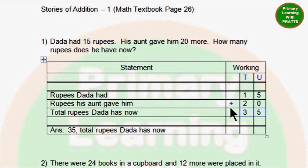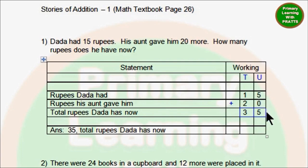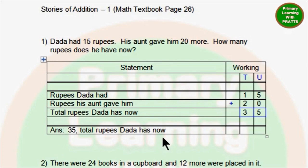Rupees his aunt gave him — 20. Because these are addition, we will put our plus sign here. Next statement: Total rupees Dada has now. We will add: 5 plus 0 is 5, and 1 plus 2 is 3. So the answer is 35. Total rupees Dada has now.